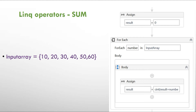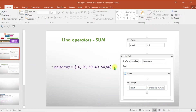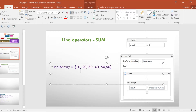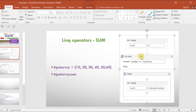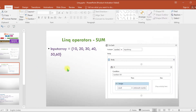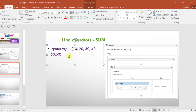Consider this input array with 6 elements — I want to know the sum of these elements. Without LINQ, what would you do? You would use a for-each loop and add every number with the others to finally get the result. But if you use LINQ, you can just type the input array dot sum and get the answer without needing a for-each loop at all.